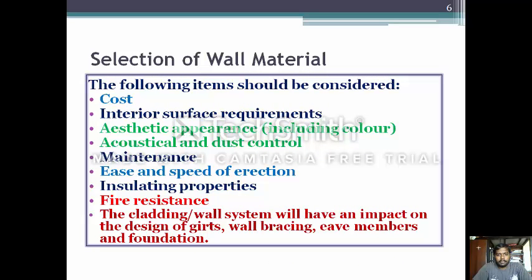Next is the selection of wall material. The following items should be considered: cost should be effective and interior space requirements addressed. Aesthetic appearance including color, acoustical and dust control, maintenance, and ease and speed of erection should be evaluated. The insulating properties must also be considered.